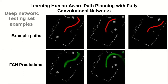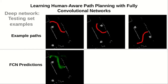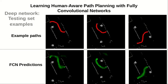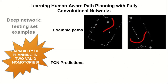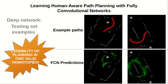Here we can see a visual comparison of labels and predicted paths from a testing set. The network learns to plan even in two equally valid homotopies in some situations.